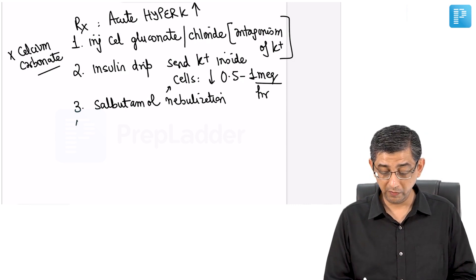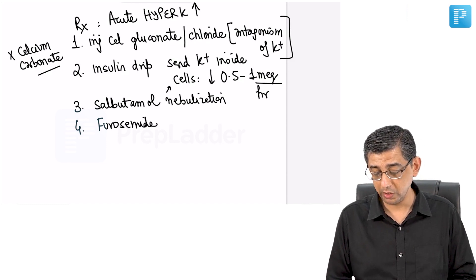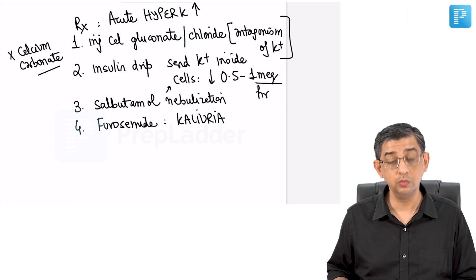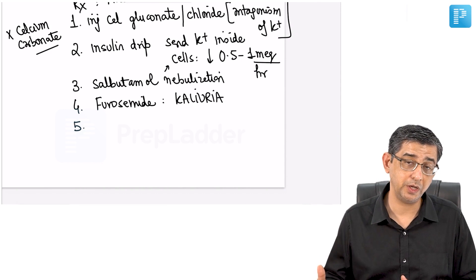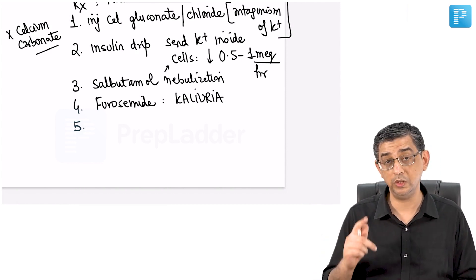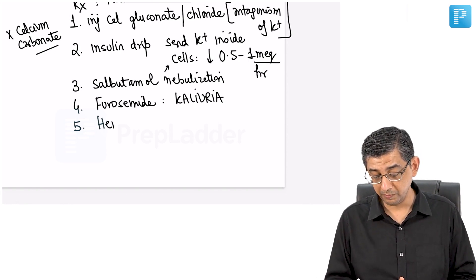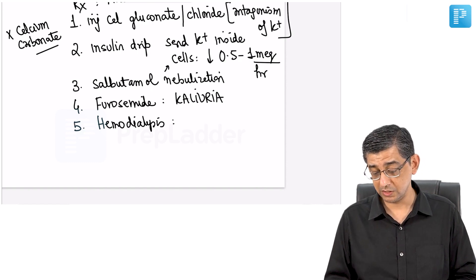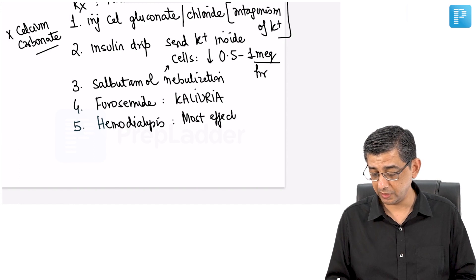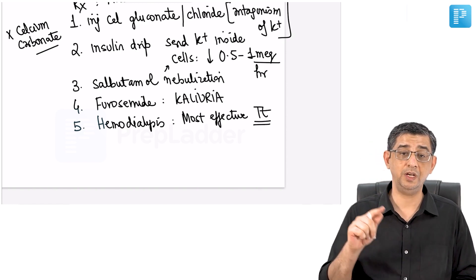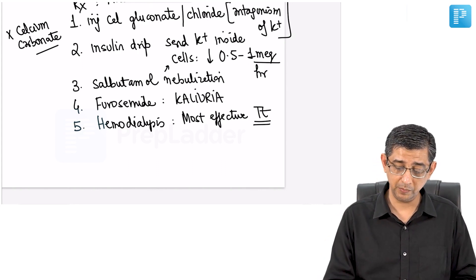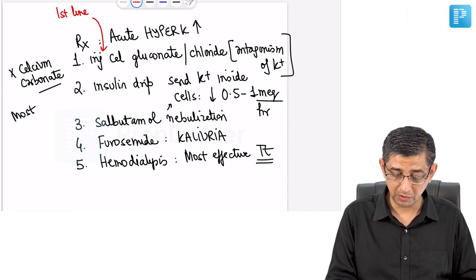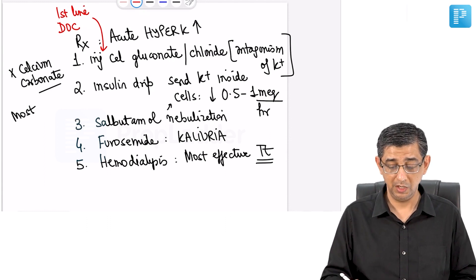The next drug — furosemide — has a different mechanism: it causes urinary loss of potassium, achieving kaliuresis. Insulin and salbutamol cause redistribution; furosemide causes actual potassium loss. If all these measures fail, hemodialysis is the most effective treatment for acute life-threatening hyperkalemia. Important distinction: calcium gluconate is the drug of choice and first-line management. Insulin drip is the most effective drug to lower potassium values. Hemodialysis is the most effective treatment overall.